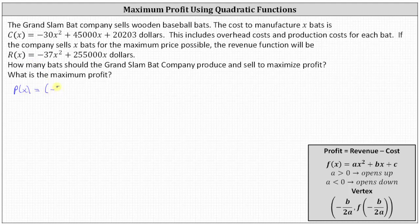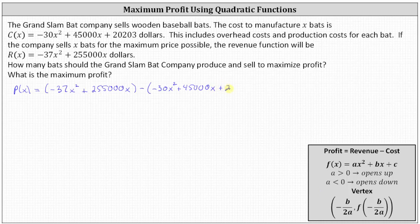which is the quantity negative 37 X squared plus 255,000 X. And then we have to subtract the cost function, giving us minus the quantity negative 30 X squared plus 45,000 X plus 20,203. Now it is important that we have the cost function in parentheses so that we subtract the entire cost function.